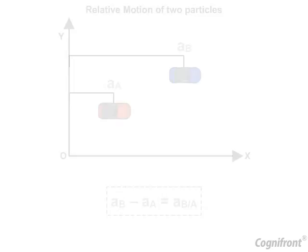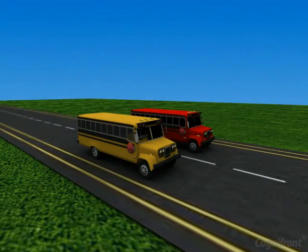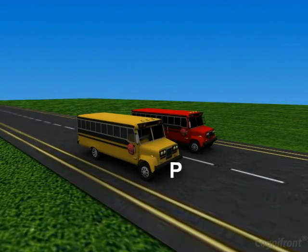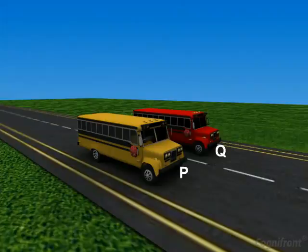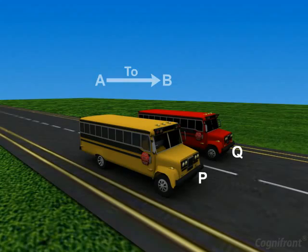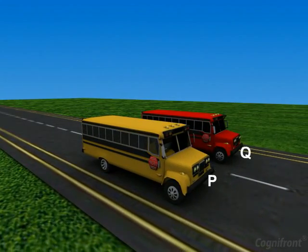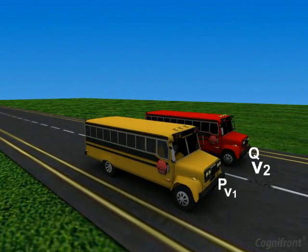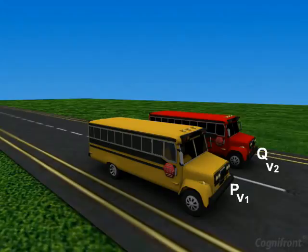Now, let's see something interesting. Observe that two buses, P and Q, are travelling along a highway from place A to place B. They are moving with the velocity of V1 and V2 respectively.